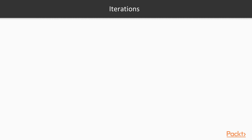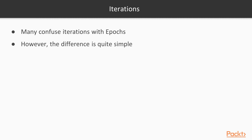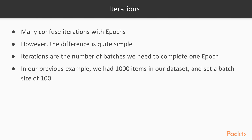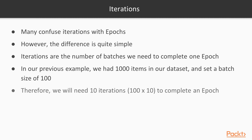Iterations are the number of batches needed to complete one epoch — people often confuse iterations and epochs. Using the same example: with 1000 items and a batch size of 100, you need 10 iterations to complete one epoch. It's that simple.